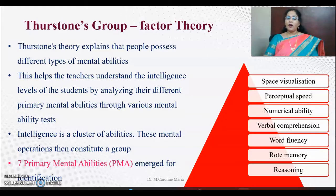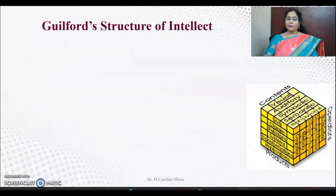Similar abilities join together as a group and constitute a person's intelligence. Thurston said that seven primary mental abilities are there for each and every person's intelligence: space, visualization, perceptual speed, numerical ability, verbal comprehension, word fluency, rote memory, and reasoning.